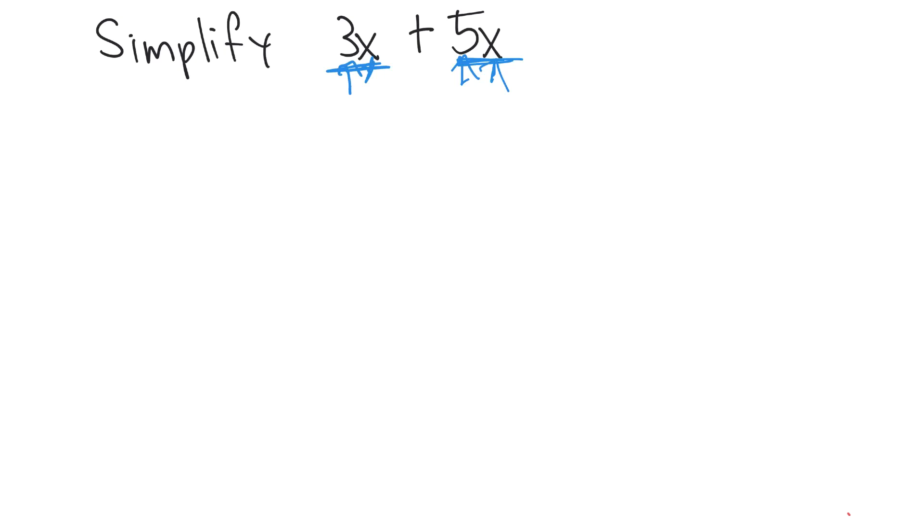So here we have 1x, here's another, and here's another. That is 3x's. Now we're adding that to 1, 2, 3, 4, 5 more x's as represented up there.